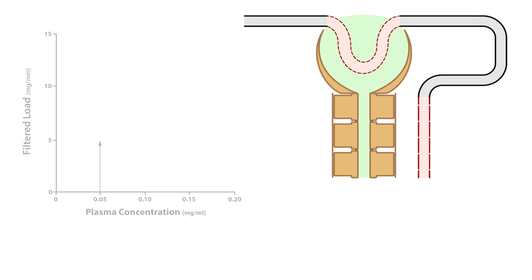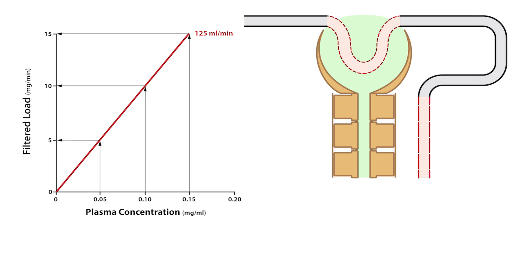So, this means at a given GFR, let's say 125 mils per minute, the filtered load increases linearly as the plasma concentration increases. However, decreases in GFR will show up as decreases in filtered load, yet the relationship between filtered load and plasma concentration will remain linear.